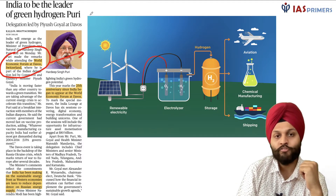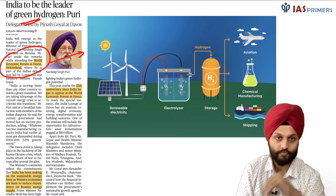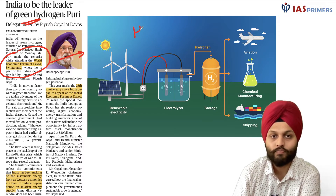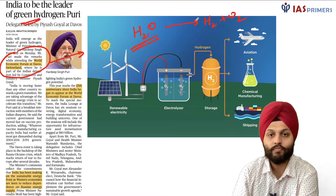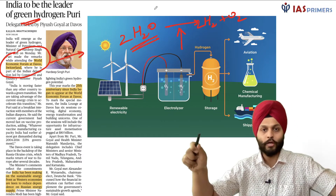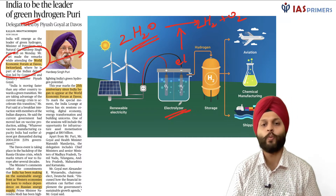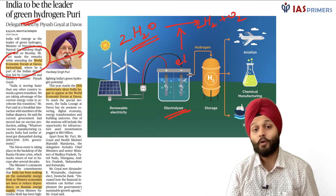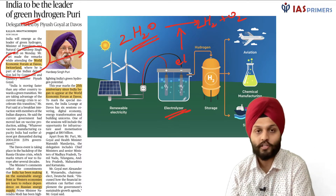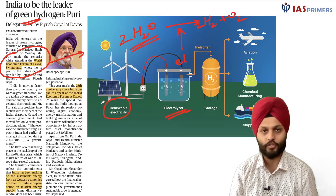We have a detailed video on green hydrogen. Briefly, it is about water — from water, we get hydrogen. Some force has to be applied to split water into hydrogen and oxygen; that force is known as electrolysis. By electrolysis, we split H₂O into H₂ and O₂. This electrolysis requires electricity, and if that electricity comes from renewables, the resulting hydrogen is known as green hydrogen — it's a clean process.